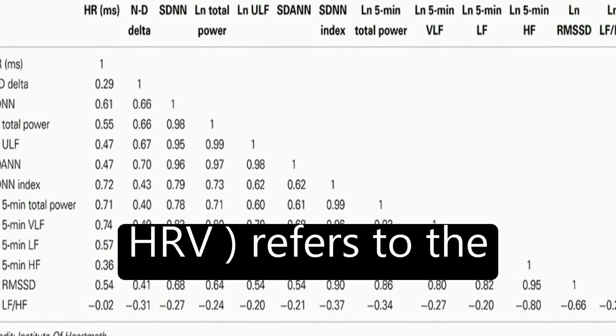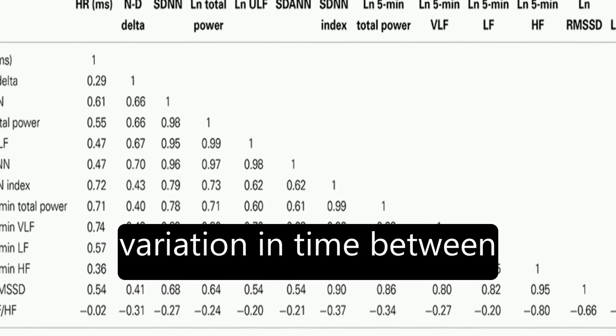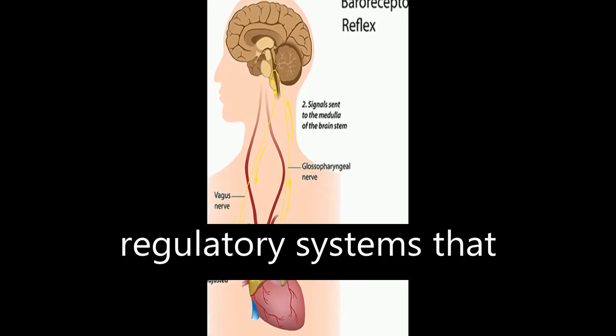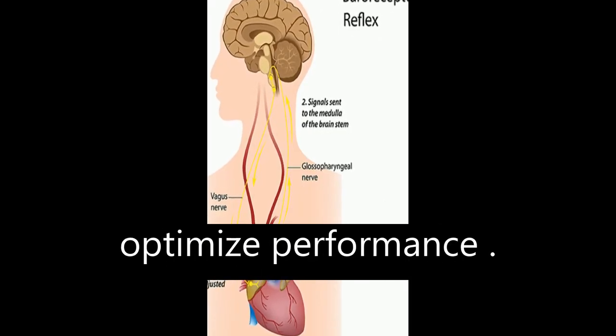Heart rate variability, HRV, refers to the variation in time between each heartbeat, resulting from the interplay of multiple regulatory systems that adapt to challenges and optimize performance.